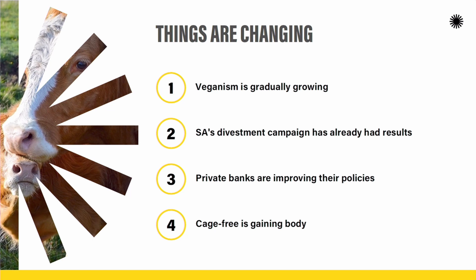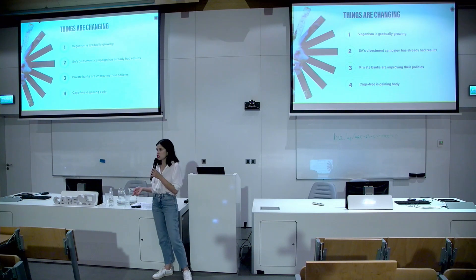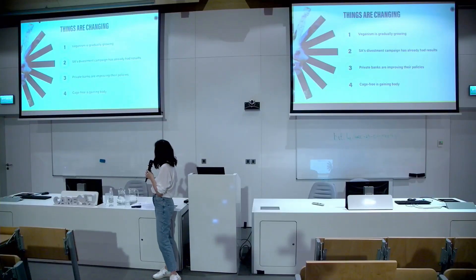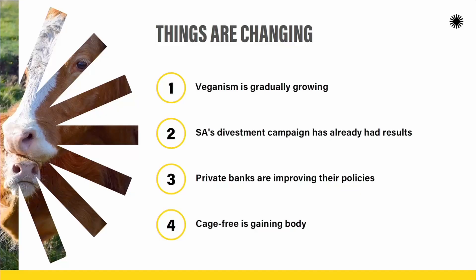Some banks have made notable progress — for example, the French bank Société Générale had a zero score in the first year, but this year published a range of new policies and became a highlight in our report for good practices. And cage-free is gaining momentum in the Global South with companies.